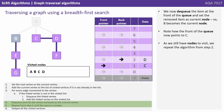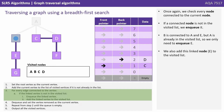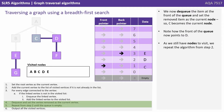As we still have nodes to visit, we repeat the algorithm from step 2. We add the current node to the list of visited nodes if it's not already in the list. B is already in the visited list, so we don't have to do anything at this point. Once again, we check every node connected to the current node. If a connected node is not in the visited list, we enqueue it. B is connected to A and E, but A is already in the visited list, so we only need to enqueue E. We also add this linked node E to the visited list. We now dequeue the item at the front of the queue and set the removed item as the current node. So C becomes the current node. Note how the front of the queue is now pointing to D.